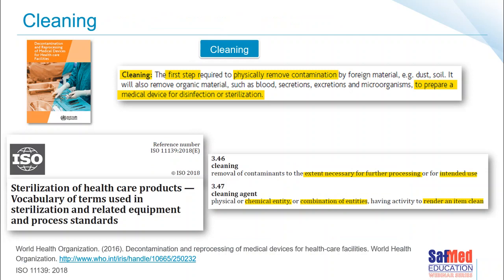When it comes to cleaning and definitions, one of the places one likes to go is straight to our guidelines that we can rely on and trust in, one of which is the World Health Organization guidelines. Cleaning, according to the WHO guidelines on decontamination, is the first step required to physically remove contamination from a device, including organic materials such as blood, secretions, excretions, and microorganisms, to prepare a medical device for disinfection or sterilization. If we go to the ISO standards — specifically ISO 11139, which covers the vocabulary and terms used in sterilization — it refers to cleaning as the removal of a contaminant to the extent necessary for further processing for the intended use of the device.